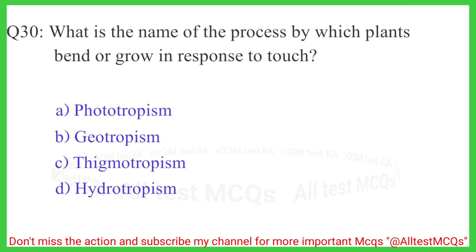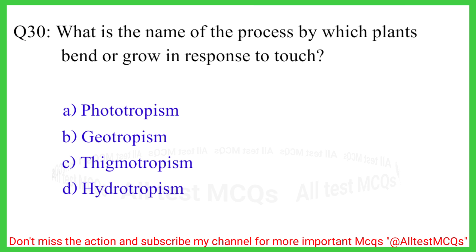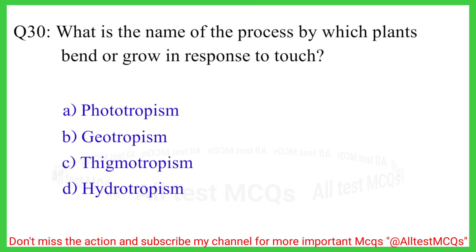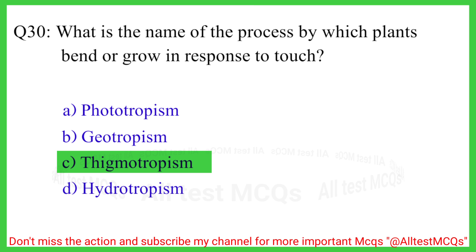Question number 30. What is the name of the process by which plants bend or grow in response to touch? The correct answer is option C, thigmotropism.